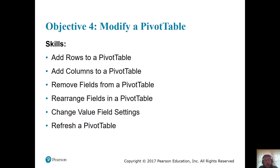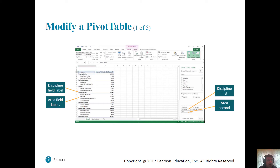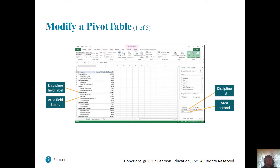Objective 4: Modifying your pivot table. Here we're going to add rows and columns, remove fields, reorder fields, change settings, and then refresh so that things update. The F9 key is usually the refresh key on a keyboard. On the left-hand side you have the discipline field label, showing discipline and then sub-disciplines underneath. The areas represent the sub-disciplines. On the right-hand side, it shows the order: discipline comes first, area comes second — that's in the pivot table fields dialog box where you make your changes. This is where you will make all your modifications — but no MyIT Lab, just theory for the midterm.